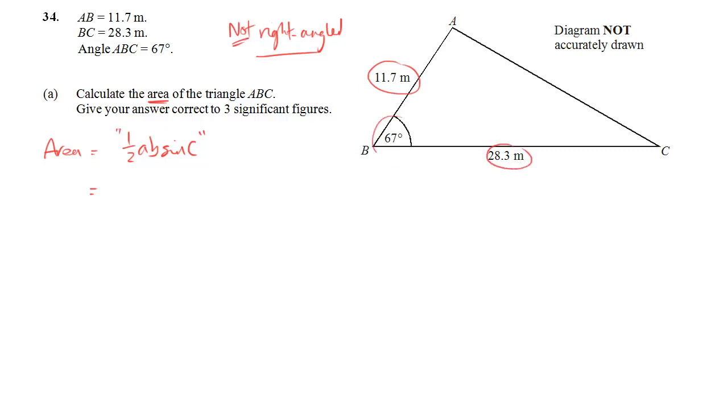So the two sides are 11.7, 28.3, and my angle C is 67 degrees. So we just put that all into the formula. Half times 11.7 times 28.3 times sin 67 degrees. And provided you put it in carefully enough,